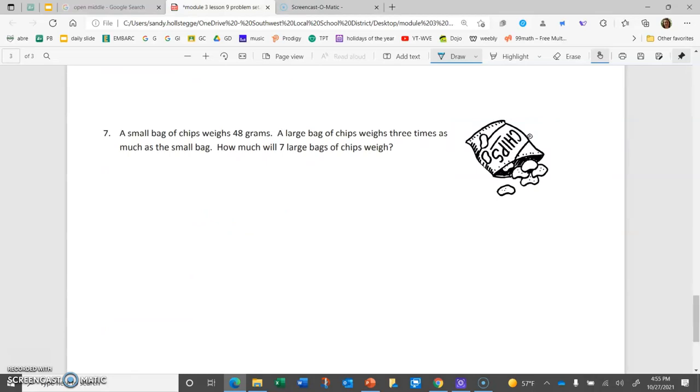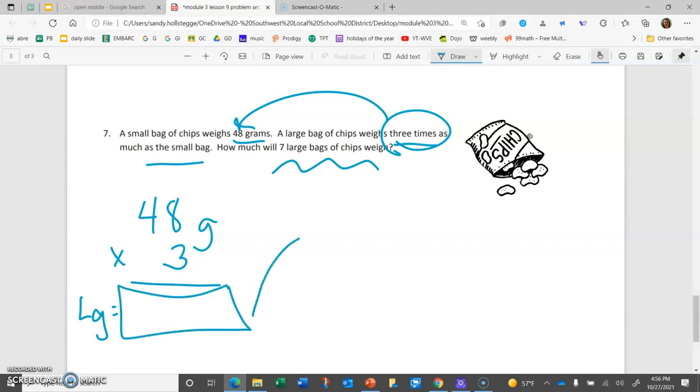And, finally, you'll solve a problem with a small bag of chips weighs 48 grams. A large bag of chips weighs 3 times as much as the small bag. And you have to figure out how much 7 large bags of chips will weigh. To solve this one, you'll need to figure out what 3 times as much as 48 grams is. Once you know that, that will tell you the weight of the large bag of chips. But then it says, how much will 7 large bags of chips weigh? So, whatever you get for that answer, you're going to need to figure out what 7 of those is. We've got ourselves a two-step problem here.